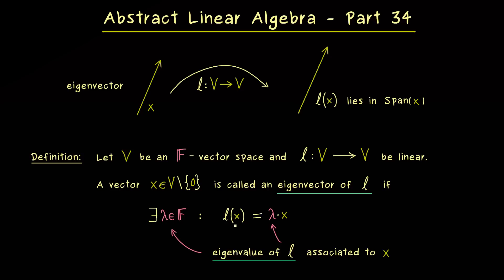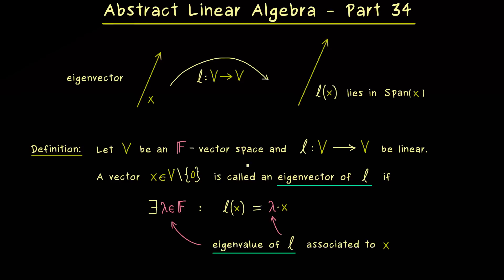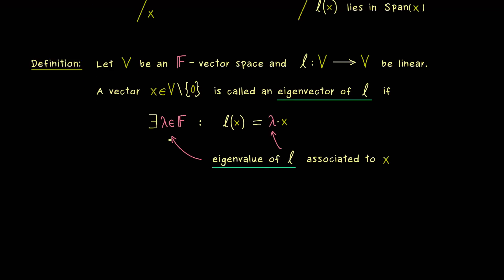However, as you might already know, for an n-dimensional vector space we will find at most n different eigenvalues. And indeed this finite dimensional case is the one we often deal in linear algebra with. But I think it's already good to know that this is the general definition for any vector space in any linear map.